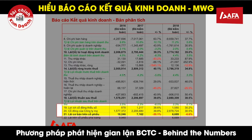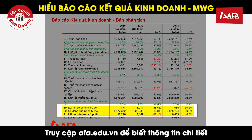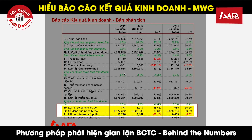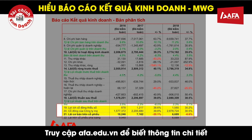Các chỉ tiêu lợi ích cổ đông thiểu số, lợi ích của cổ đông mẹ và lãi cơ bản trên cổ phiếu (EPS) là những chỉ tiêu quan trọng tác động mạnh mẽ đến thị trường. EPS tác động rất mạnh mẽ đến hành vi của các nhà đầu tư vì nó là một cấu phần quan trọng để tính chỉ tiêu P/E (Price per Earning - thị giá trên lãi cơ bản trên cổ phiếu). Chỉ tiêu P/E này thường được các chủ thể tham gia thị trường sử dụng nhiều trong các mô hình định giá và tác động đến hành vi mua bán cũng như các hành vi tài chính khác.